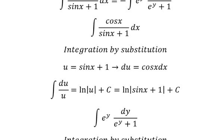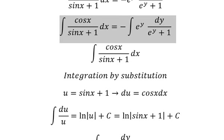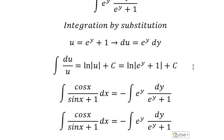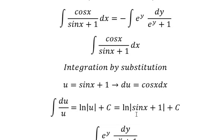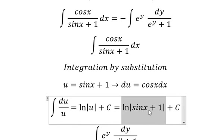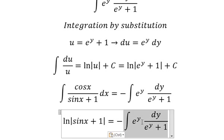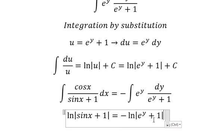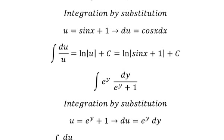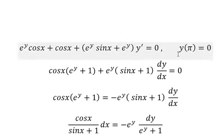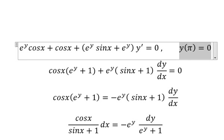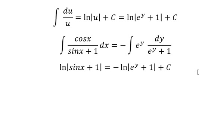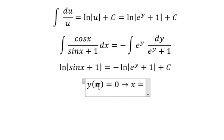And now we have the final answer. The integration on the left side equals the integration on the right side, plus c. Now we have the conditions: when x equals to b, y equals to number 0.